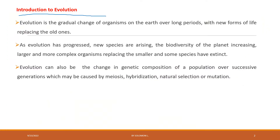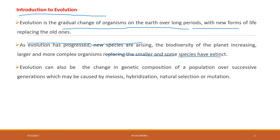Introduction to evolution. Evolution is a gradual change of organisms on earth over a long period of time, with new forms of life replacing the old ones. As evolution has progressed, new species are arriving and the biodiversity of the planet increases — the number of plants, animals, and microorganisms increases over time. Larger and more complex organisms replace the smaller and simpler ones, and even some species have been extinct.